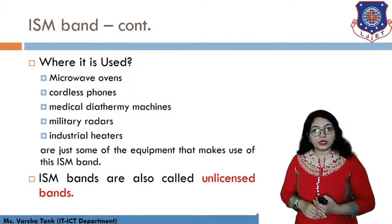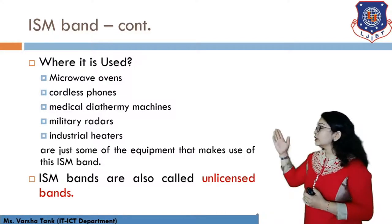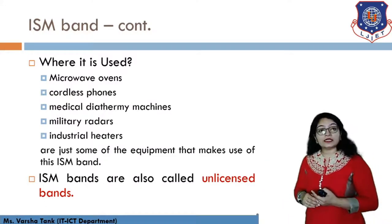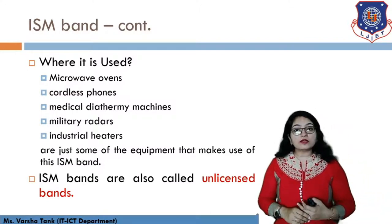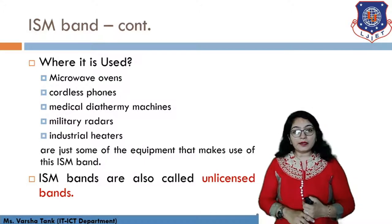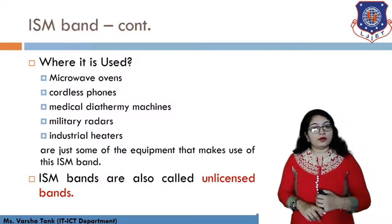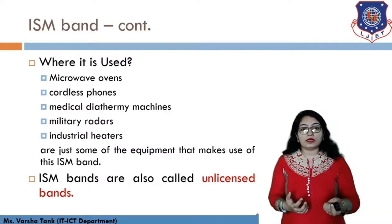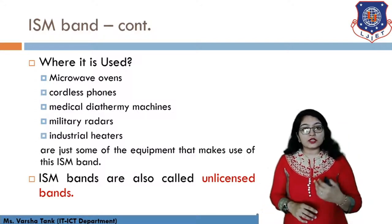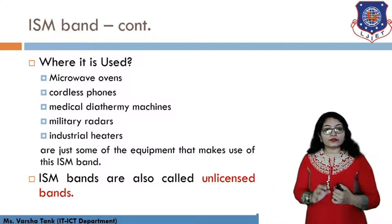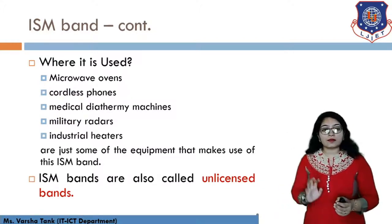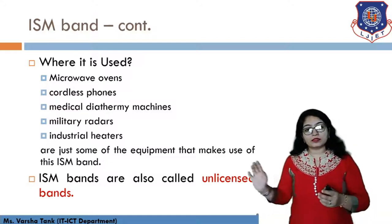The ISM band is used in microwave ovens, cordless phones, medical diathermic machines, military radars, and industrial heaters. ISM bands are also called unlicensed bands — we don't have to obtain any licensed band for Bluetooth technology. For example, to establish a GSM structure you require a licensed frequency, but for Bluetooth you don't need to receive any license from a third party. You can simply access the ISM band using Bluetooth because it is free.